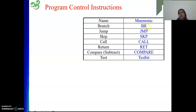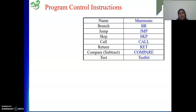The branch instruction is used whenever we go for conditional branching. How do we implement conditional branching? By looking at the result of the previous instruction. How do we check the result? By looking at the value of the flag content. Whatever flag we are interested in, we check that flag value. If the value is 1, we take the branch depending on the condition.